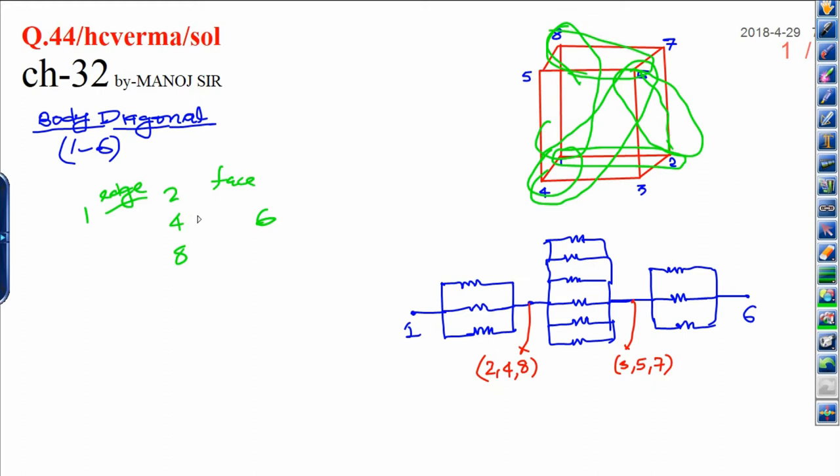By this way, you will get the symmetry and you will get the same potential. If the potential is same, then they are connected in parallel. If they are connected in parallel, it can be solved.